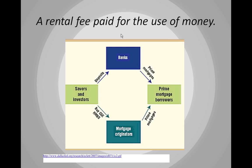A bank or a mortgage originator acts as a financial intermediary. It takes money from savers and investors, bundles it up, and then lends it to borrowers. What's important in this system is that the people who borrow the money actually pay it back. If most of the money isn't paid back, this entire system falls apart.